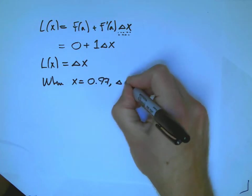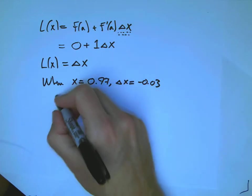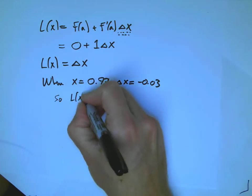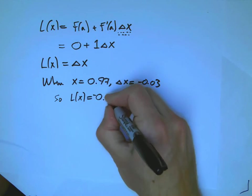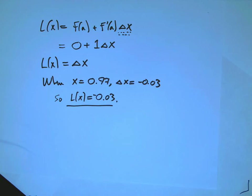And so L, when x is 0.97, we already calculated that delta x, how far you have to go from your base point to the point of interest, was minus 0.03. So, in this case, it happens to be just that number again, is our approximation for the log of 0.97.